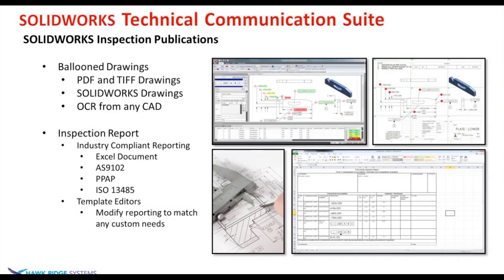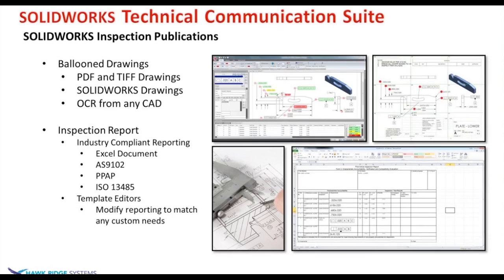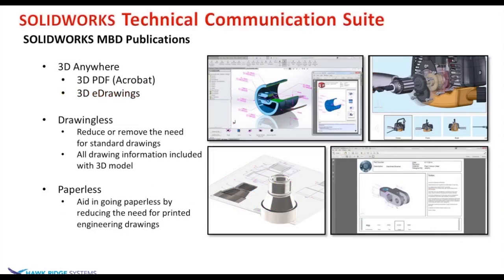Model Based Definitions — we're calling it '3D Anywhere.' It's a 3D PDF viewable by Acrobat Reader, and there are also many 3D PDF readers for phones and tablets. The e-drawings function works on mobile devices and can view models from Model Based Definitions with all the PMI data — dimensions, GD&T, notes, annotations — right in 3D. This allows you to go drawing-less and paperless, eliminating the need to print or develop high-end technical drawings.